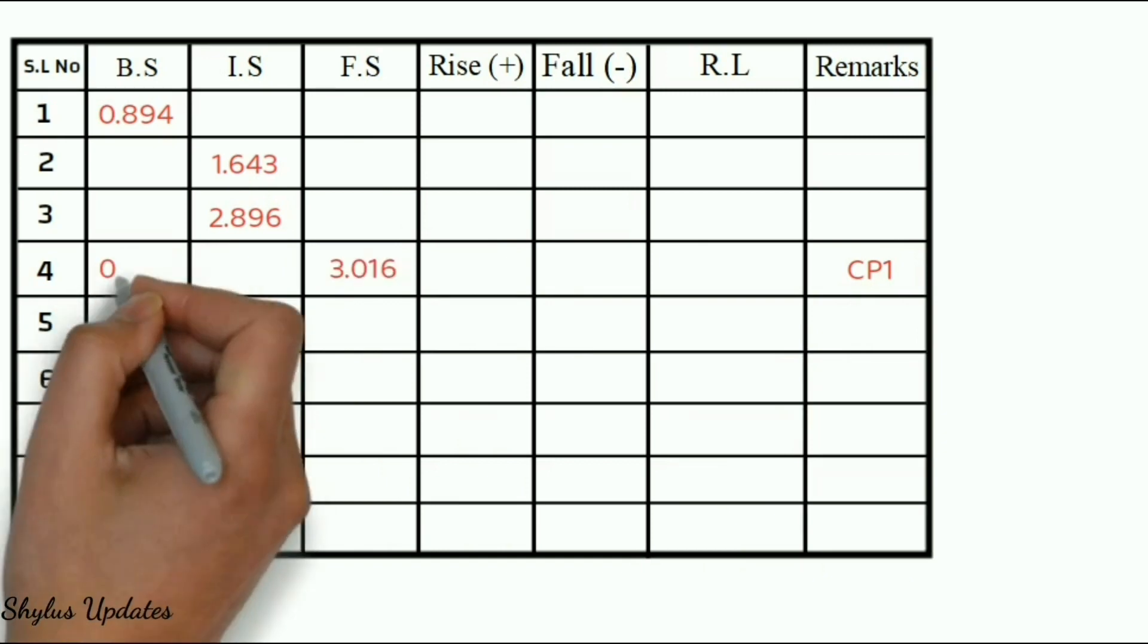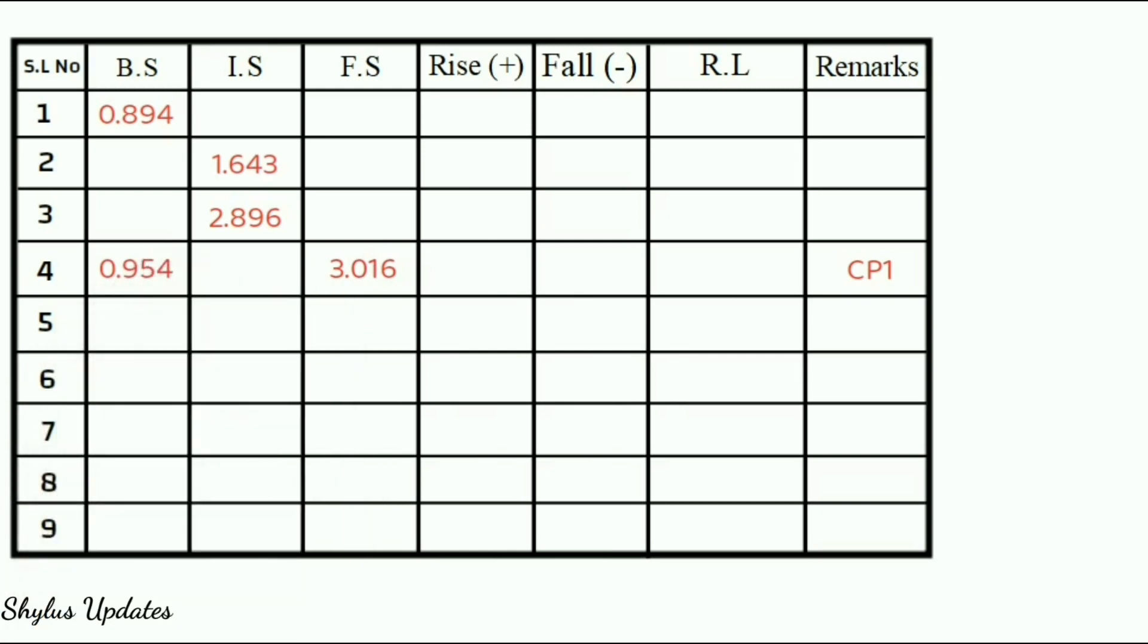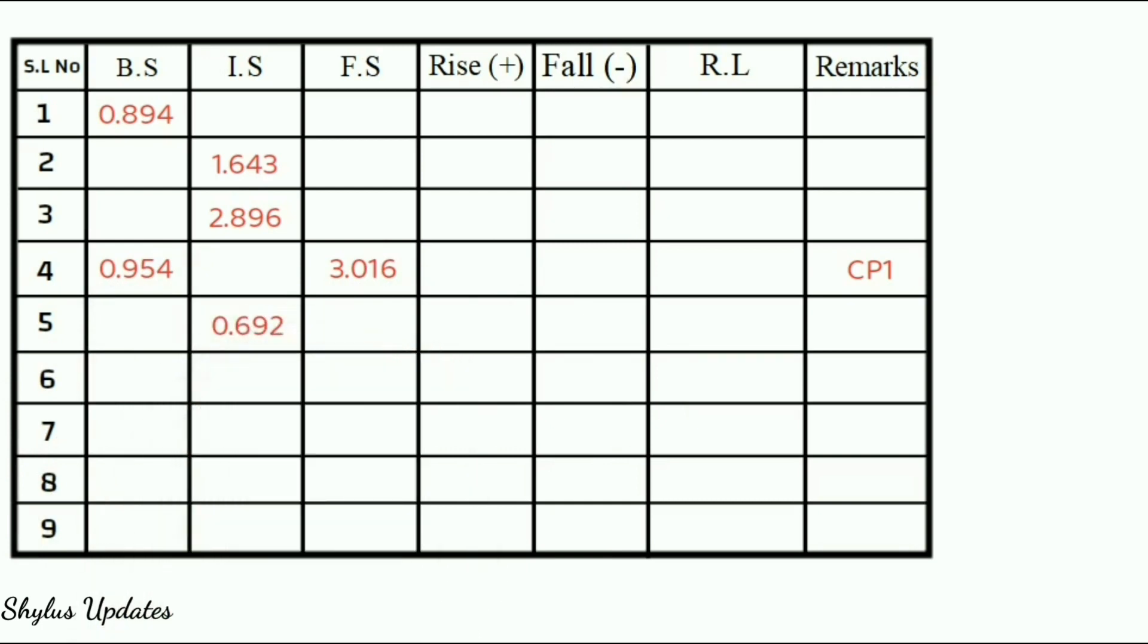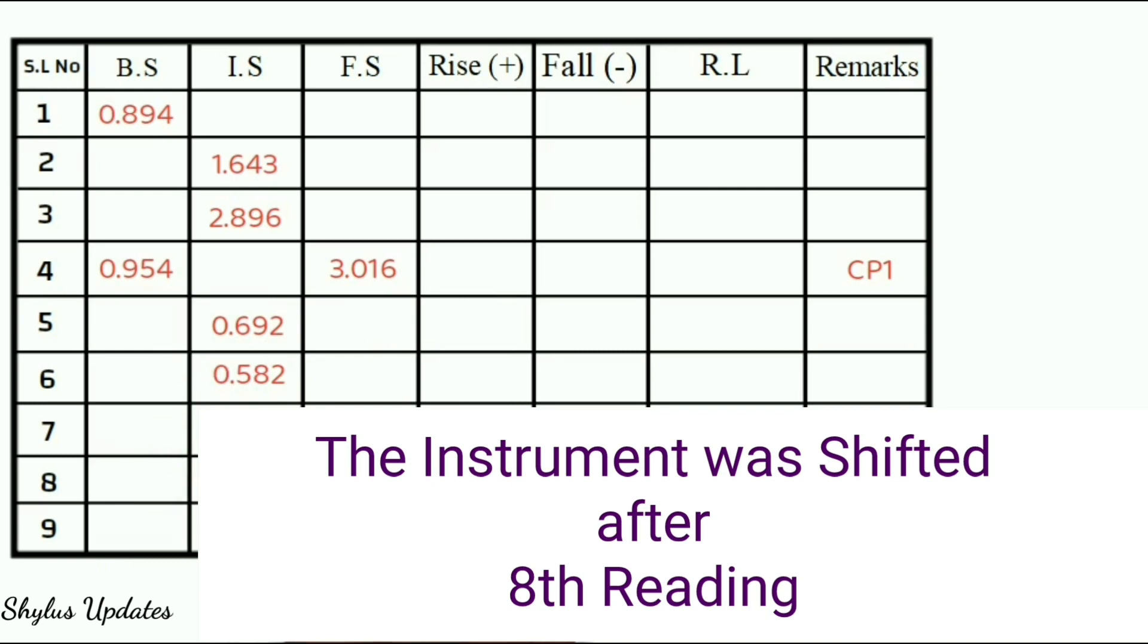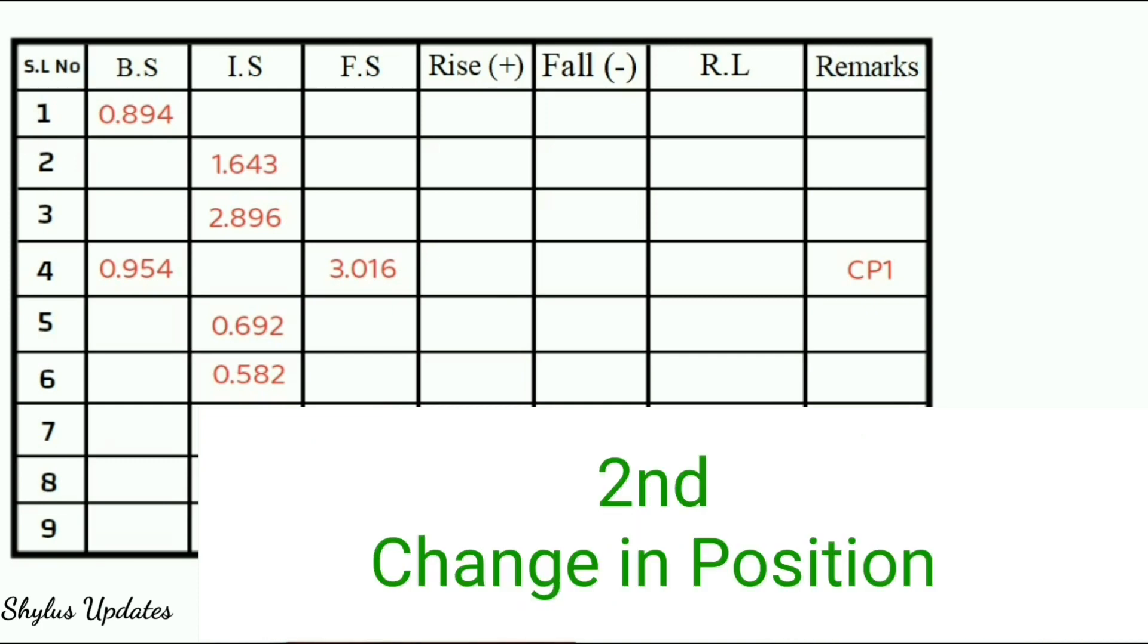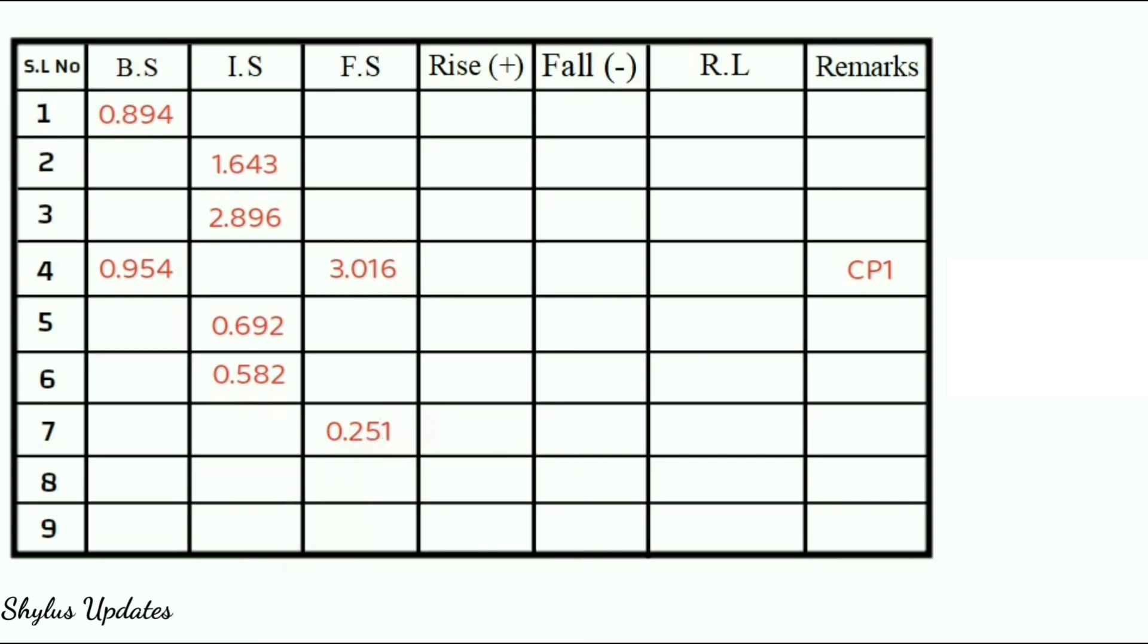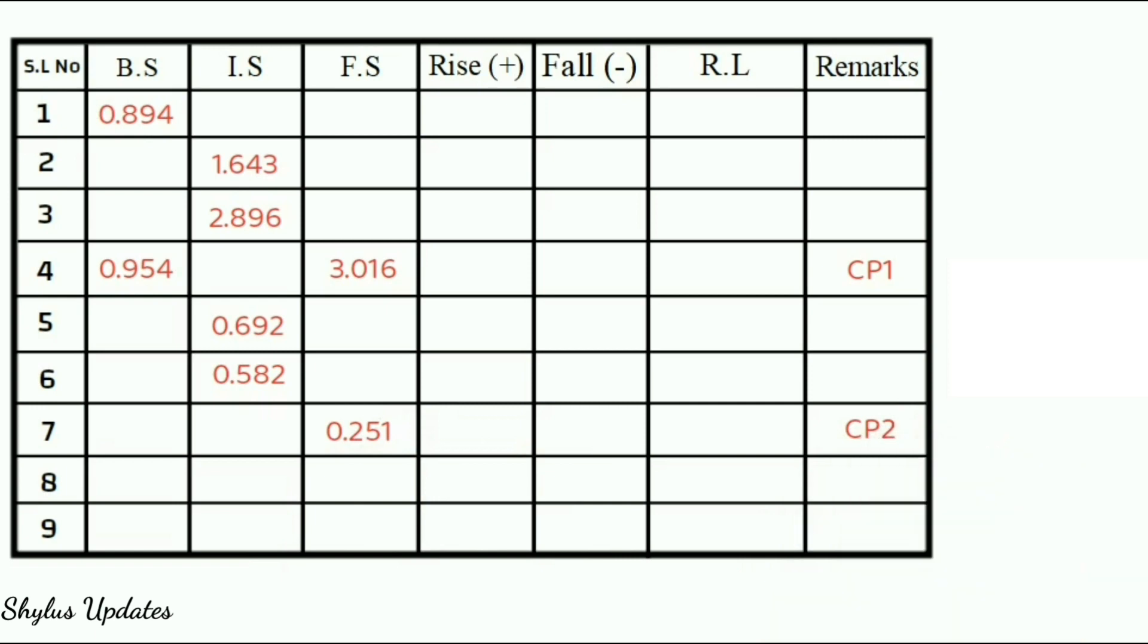After this, next reading, that is 5th reading 0.954 should be entered in back sight BS. Next, up to change in position, the following readings should be entered in intermediate sight IS. In question, they have said that the instrument was shifted after eighth reading also. So, this is the second change in position. Therefore, the eighth reading 0.954 should be entered in foresight FS and also mentioned in remarks column as CP2. That is, second change in position.